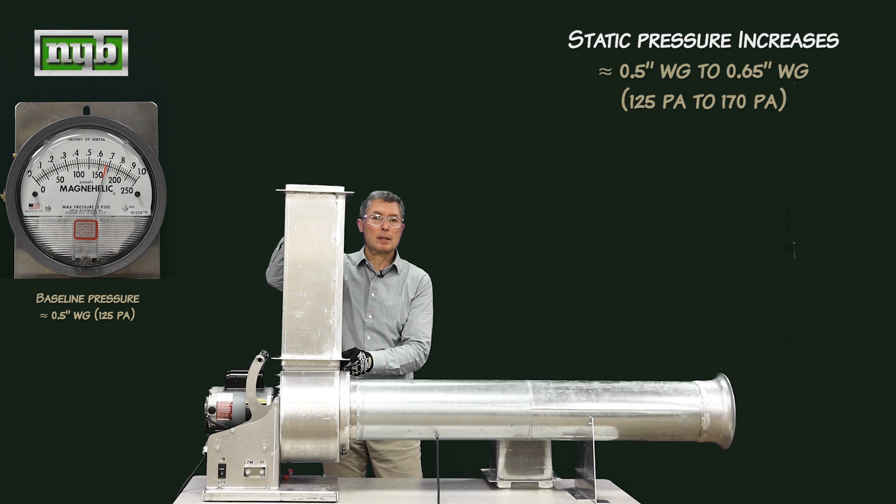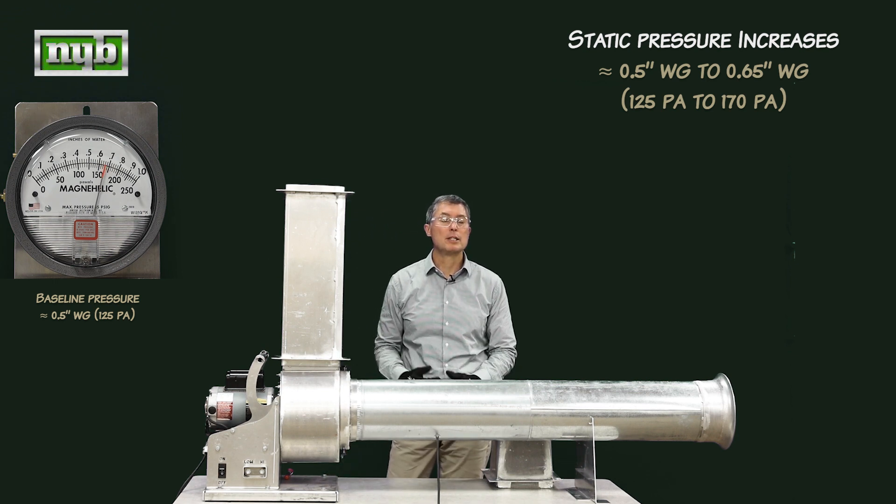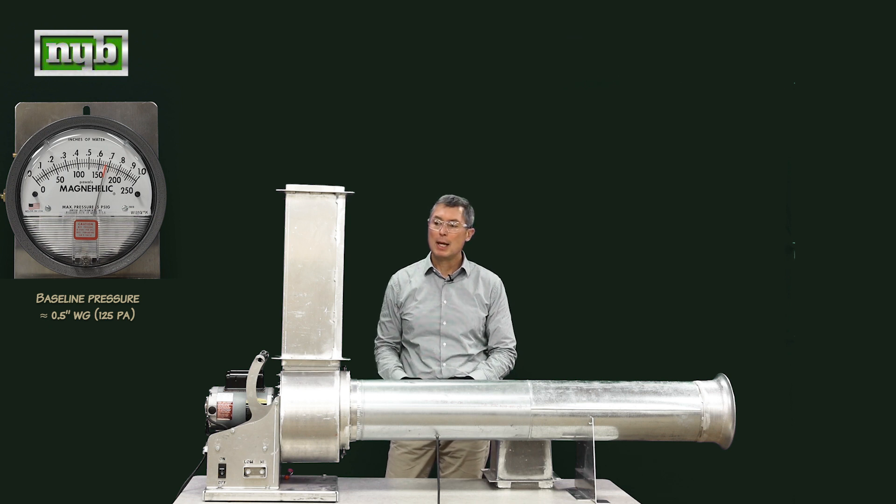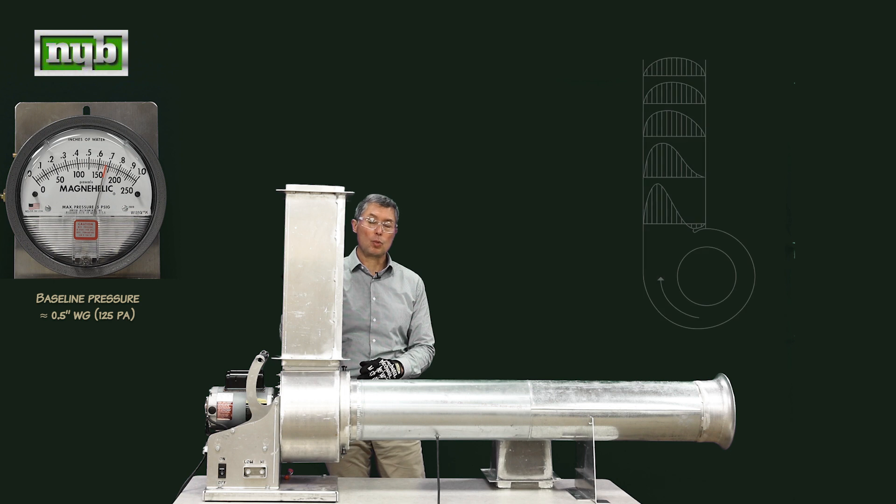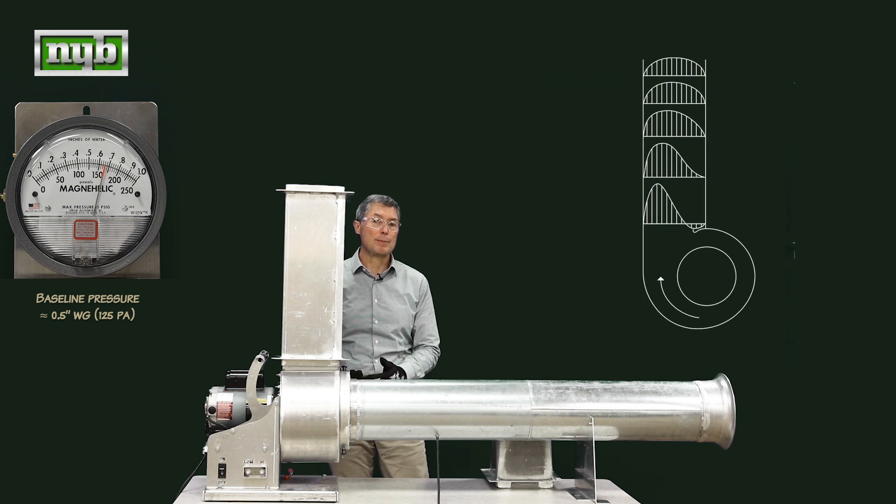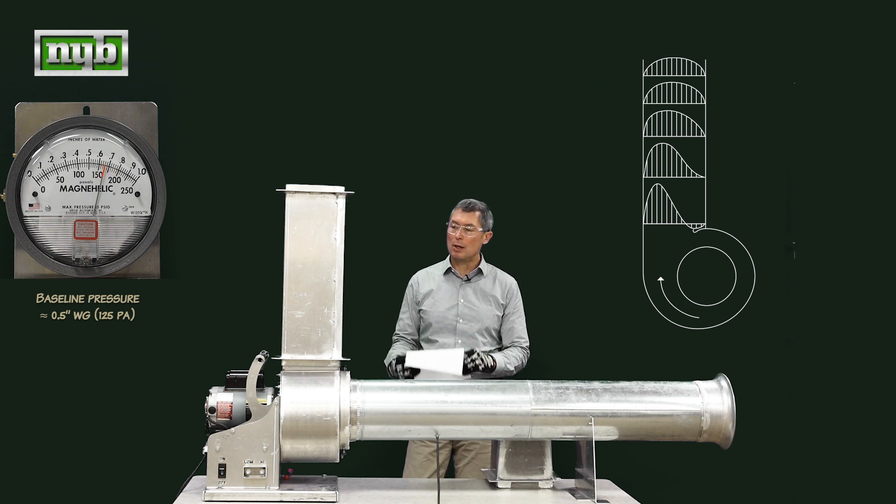Put it on the outlet and we notice that that velocity pressure measured by the magnetic helic has gone up pretty substantially. And that's because you have static pressure regain in this piece of ductwork and we're allowing the velocity profile to even out. What do I mean by an evened out velocity profile?